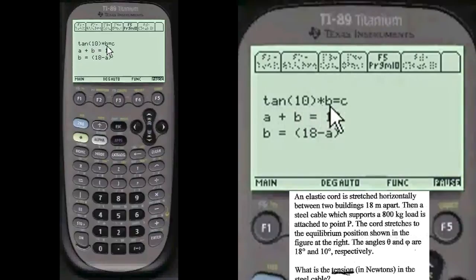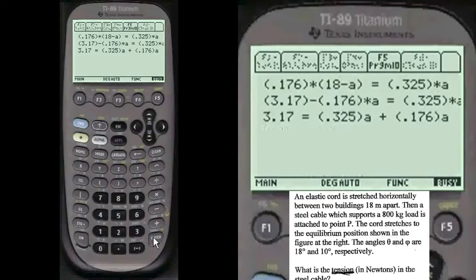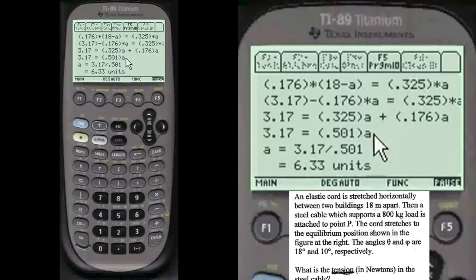And so tangent of times B would equal to C. A plus B is equal to 18. That's the total distance apart. And so B would be 18 minus A. And just write this stuff down. You can take your time and look at it if you really want to learn it. But I was always interested in passing tests, not completely learning physics.